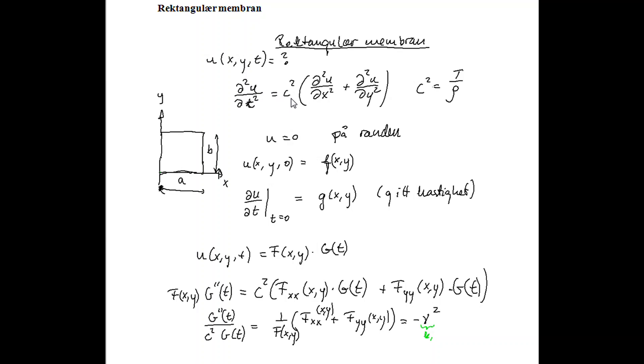And the wave equation in two dimensions takes this form, where C squared is equal to the tension, capital T, over the density, rho.